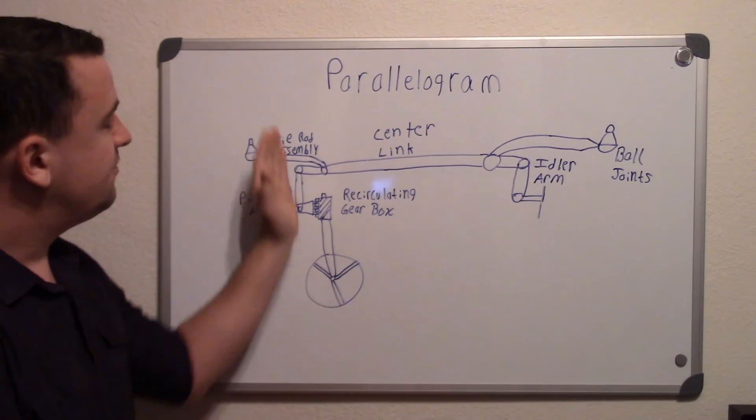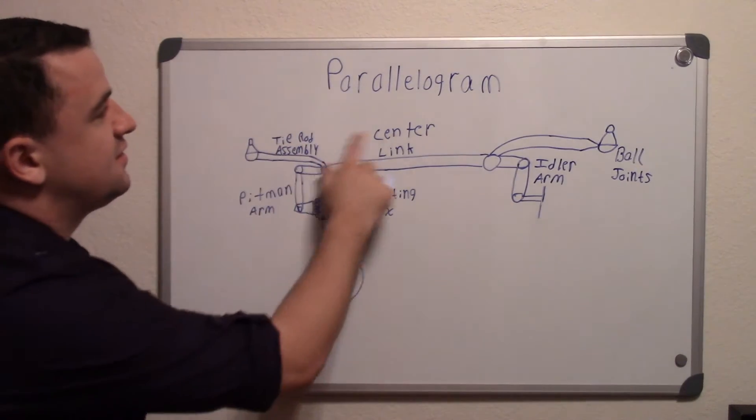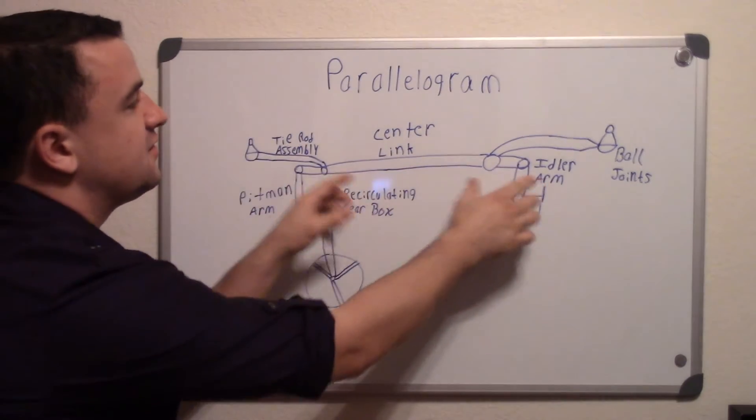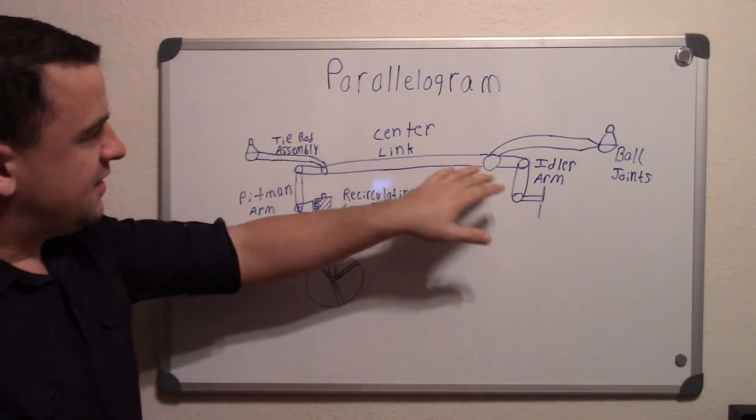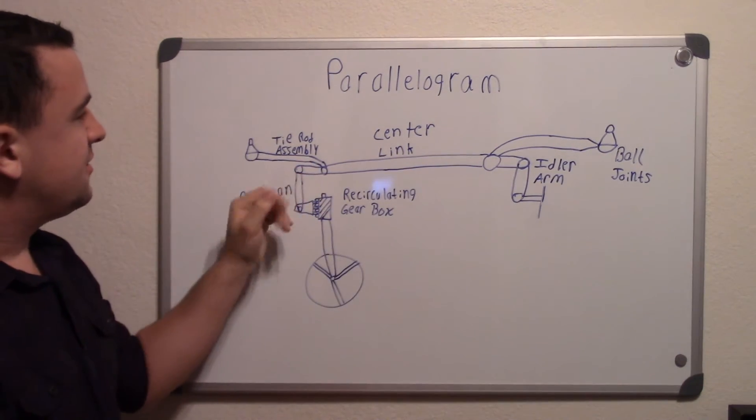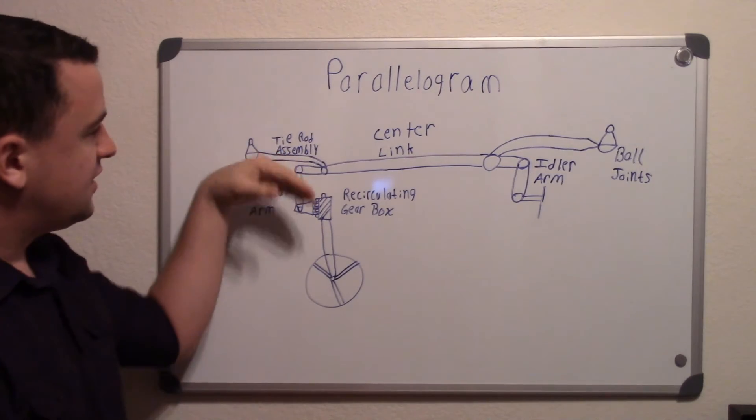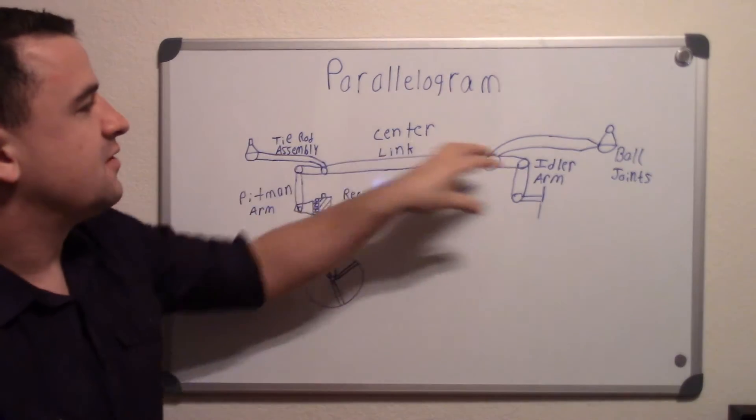As this Pittman arm moves up and down, it connects to this center link and sends it moving sideways. This can be hard to see, but as the Pittman arm is moving, it's connecting and moving the center link back and forth.